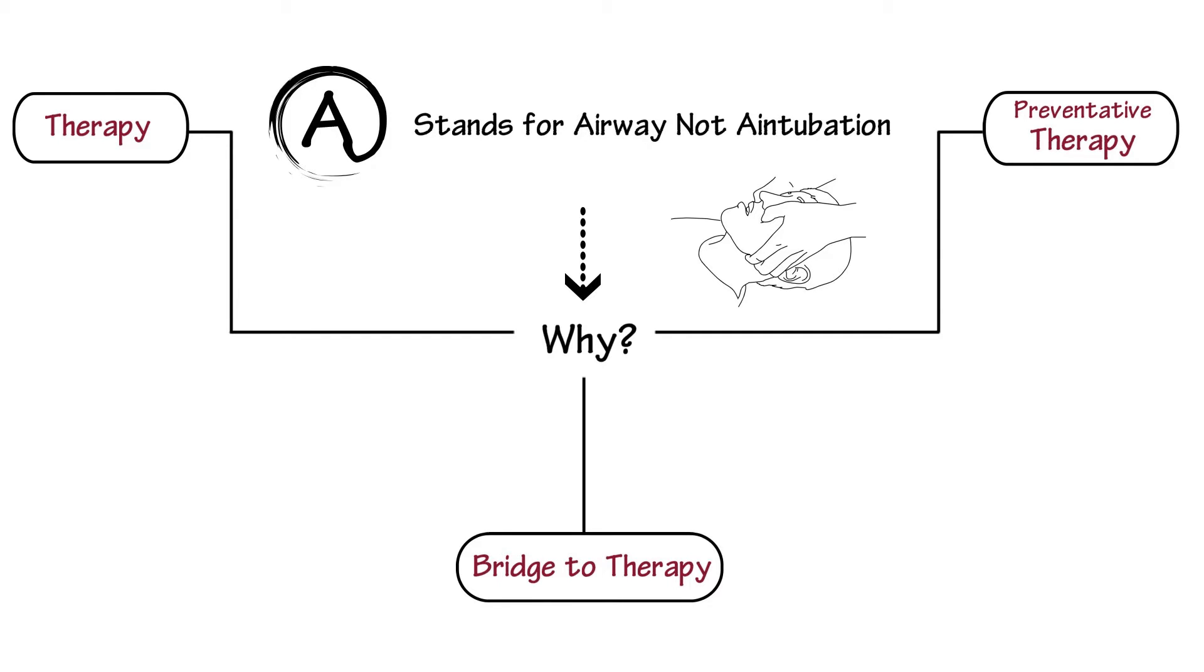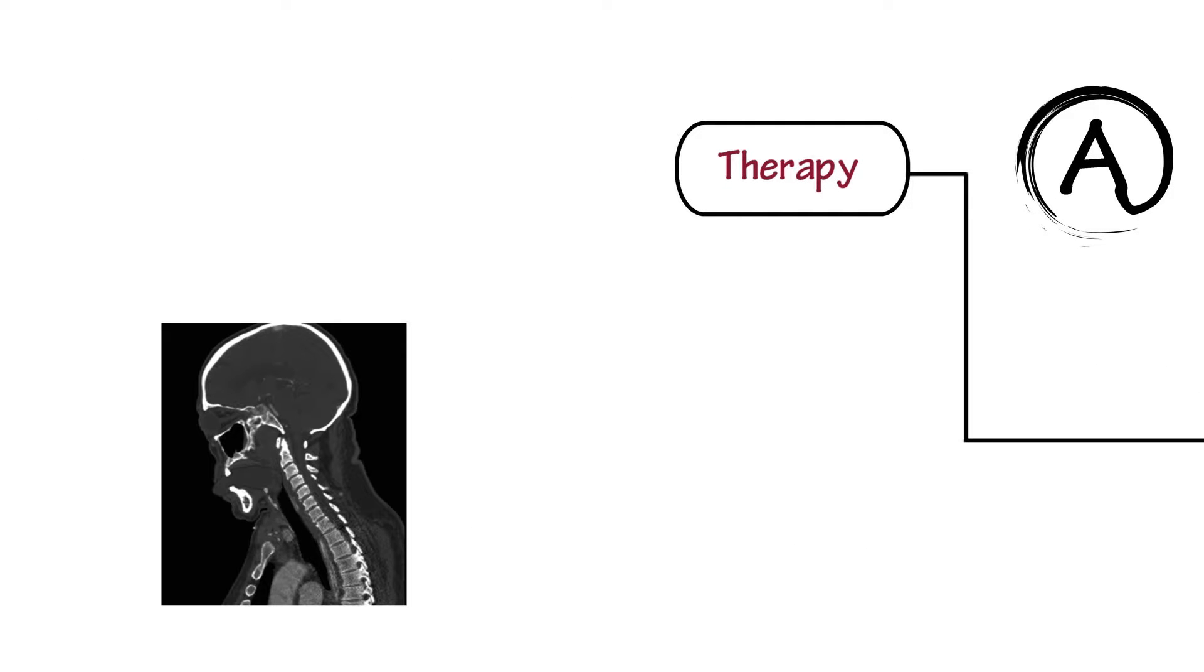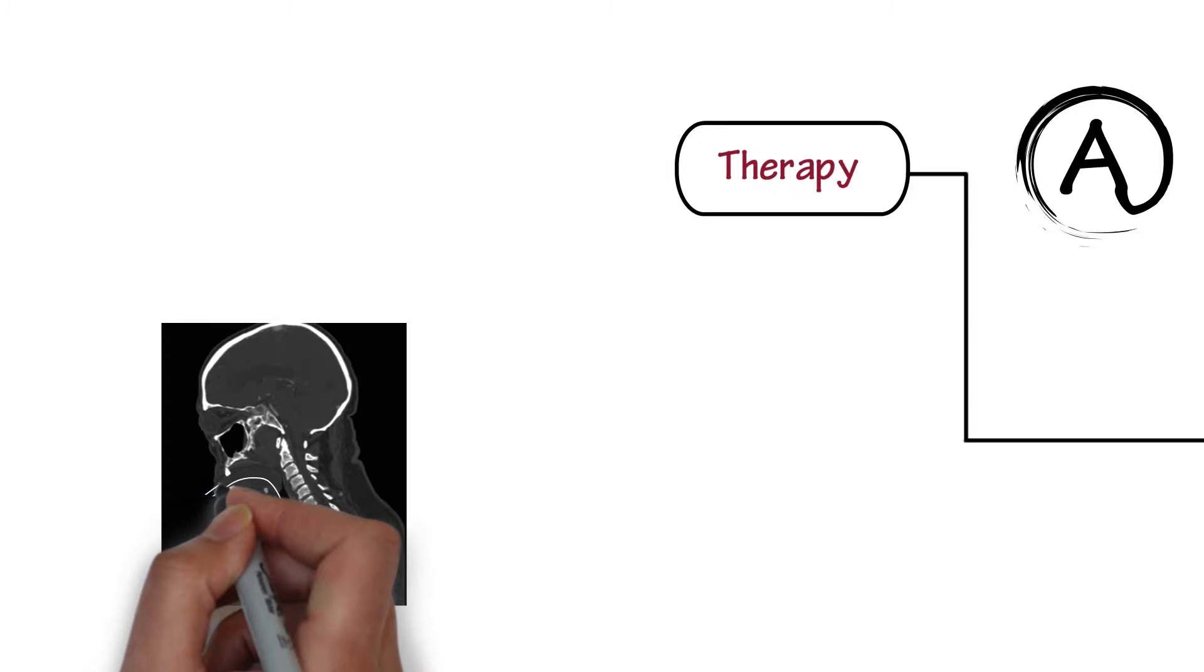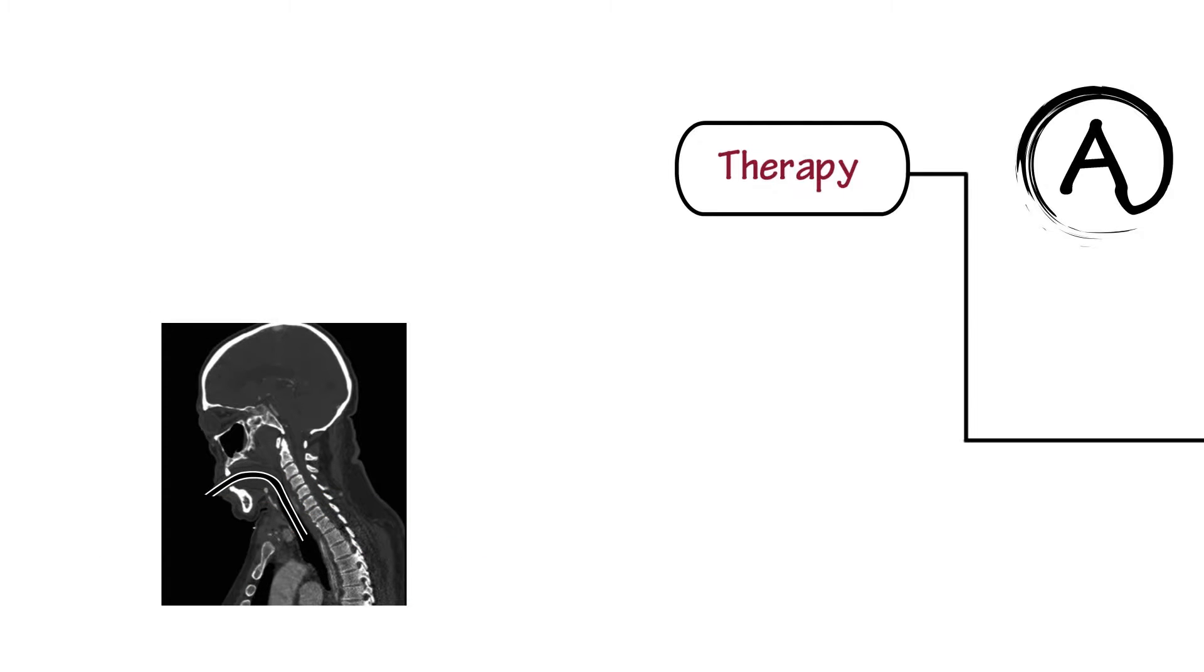In angioedema with any concerning respiratory signs, like stridor or tripodding, the plastic tube is the therapy. In these cases, intubation is a true priority. I don't need labs, I don't need imaging, I don't need drugs except for intubation drugs.